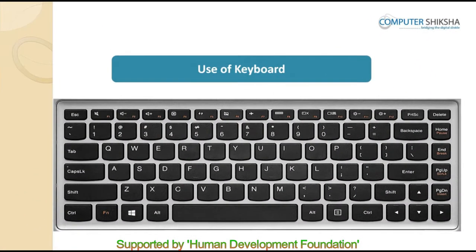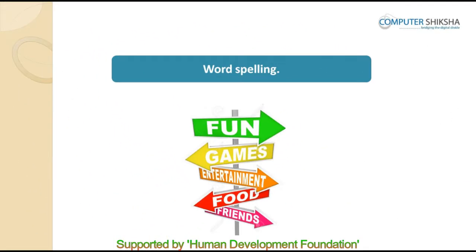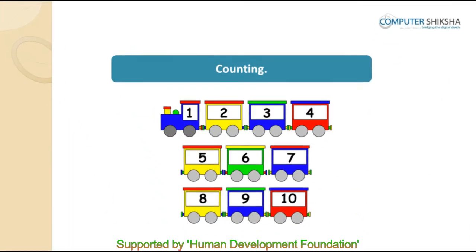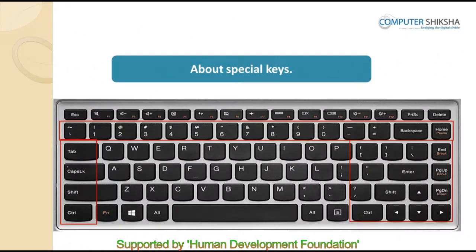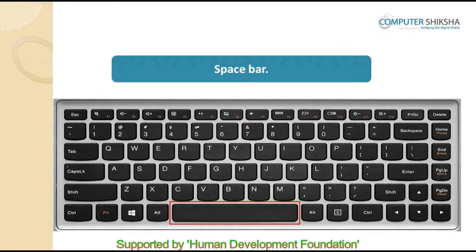The keyboard helps us in typing — you use the keys to type out someone's name, a word spelling, counting, etc. The special keys on the keyboard include enter, delete, space bar, etc. These keys are used in various places in many ways, and you will all learn where they are used in the next slide.